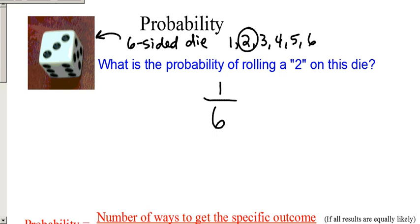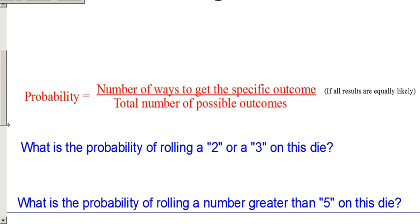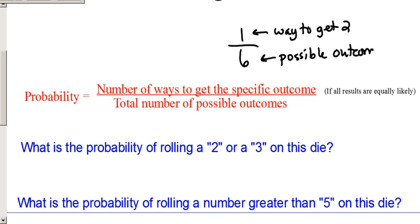So probability in general is the number of ways to get a specific outcome divided by the total number of possible outcomes. In this case, there is one way to get a 2 out of the six possible things we could get on the die. That's what you're going to do for probability: see how many ways there are to get the thing you're looking for compared to how many total possible outcomes there are.